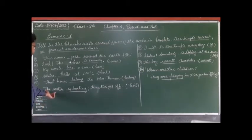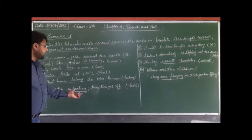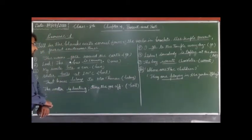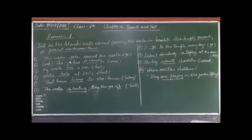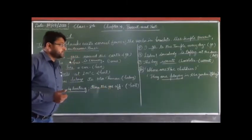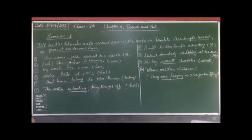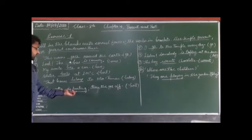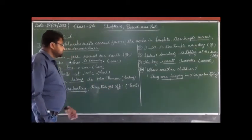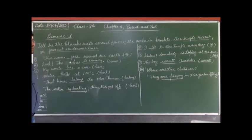The next sentence is: water dash, turn the gas off. This sentence shows the continuity and continuous activity of the present, because 'turn the gas off' shows a present continuous activity. So the sentence will be: the water is boiling, turn the gas off. 'Boil' is changed to 'boiling' to make it present continuous.